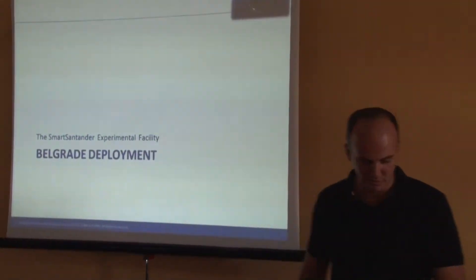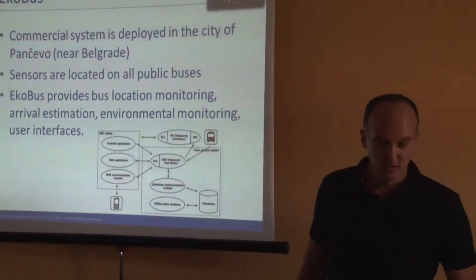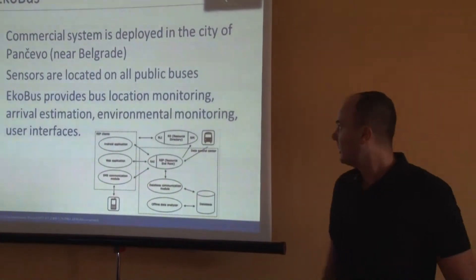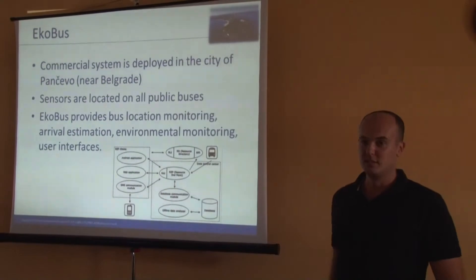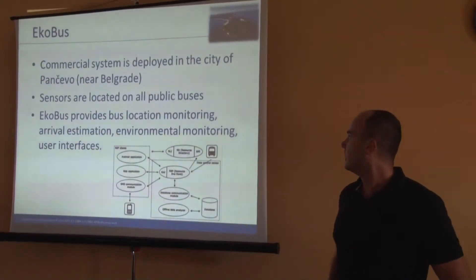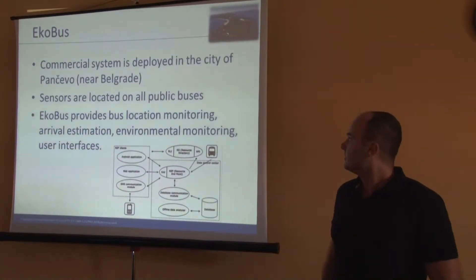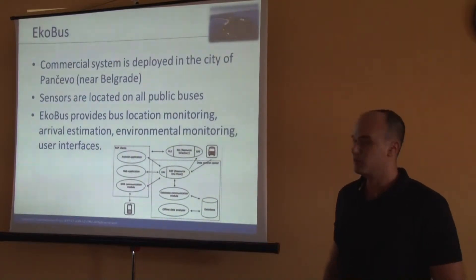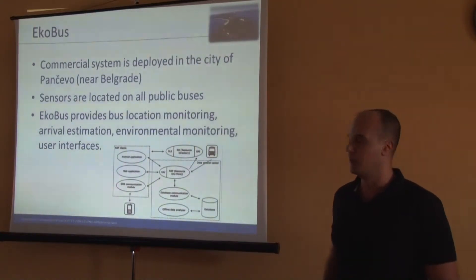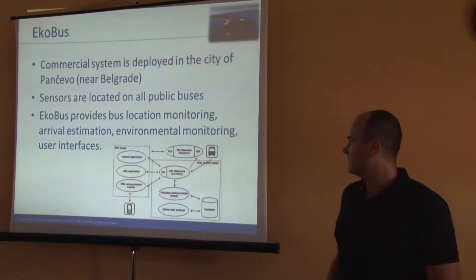The last one is the various deployments. The first one is the EcoBus system, which is one commercial system deployed in Pancha, a city near Bellevue. As you can see from the name of the deployment, it's related to the bus system, and sensors are located on all public buses in the city of Pancha, providing monitoring of location of those buses, arrival time, and things like this.